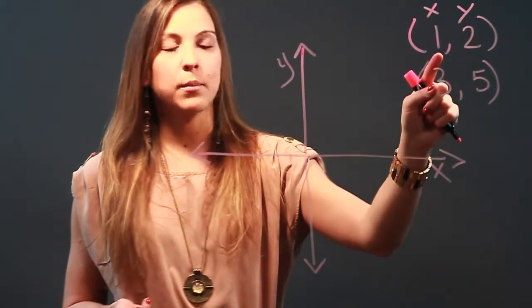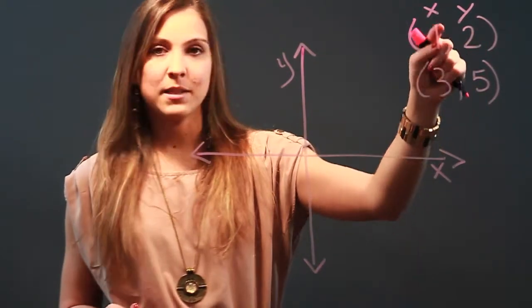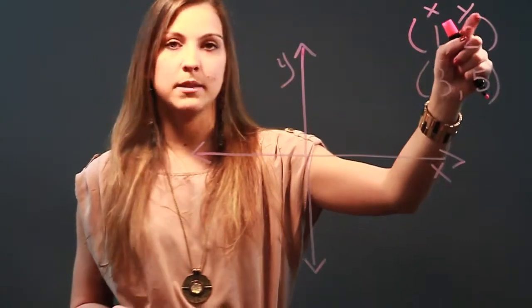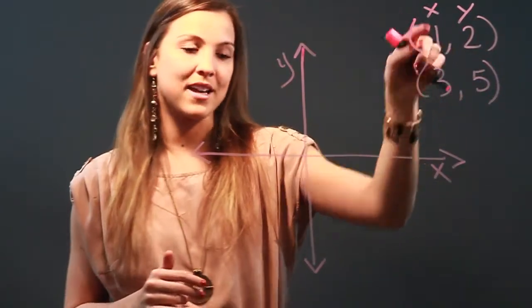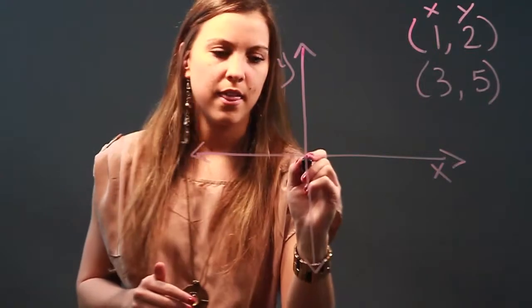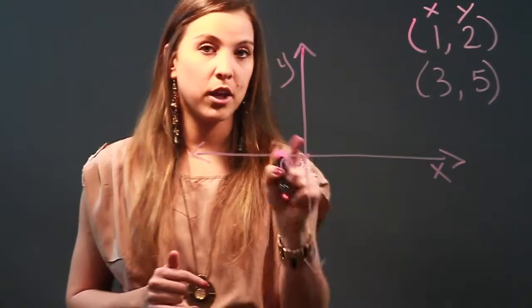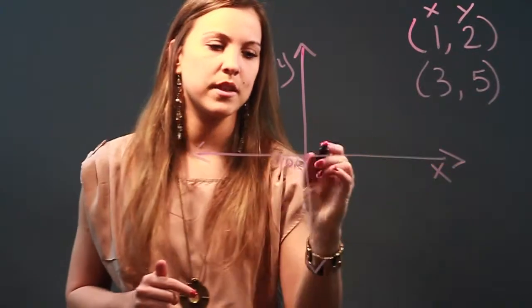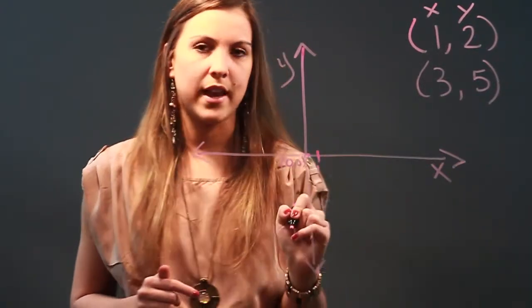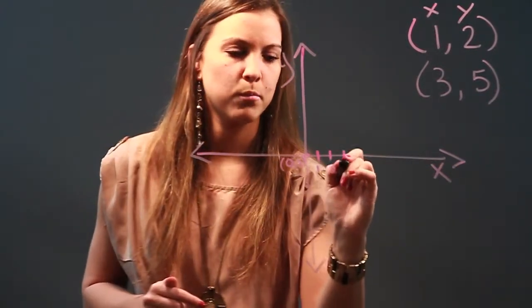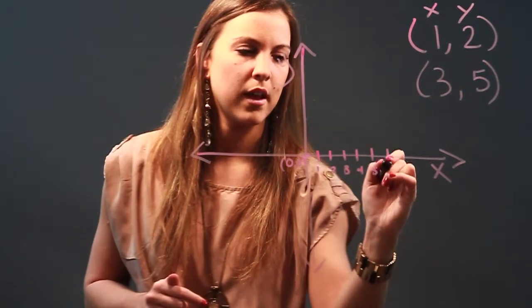So when I go to plot the point 1, 2, 1 is my x-coordinate and 2 is my y-coordinate. So I'm looking for 1 on the x-axis first. So on this x-axis, this is called my origin. This is always the point 0, 0. From here I'm going to go to 1 and all my positive numbers are over this way. So that's the number 1 on the x-axis and I'll actually draw some more numbers while we're here. So this is just like drawing a number line.